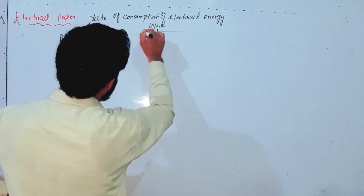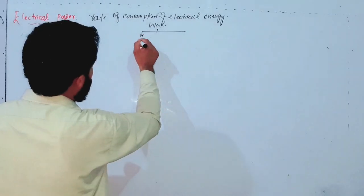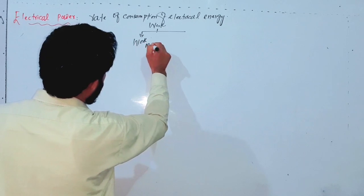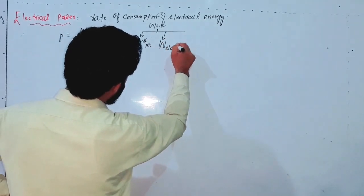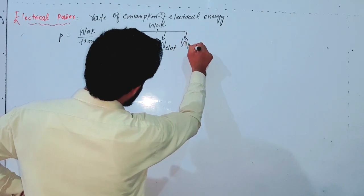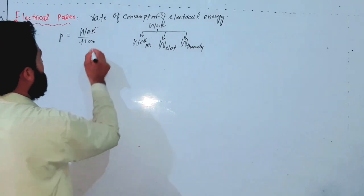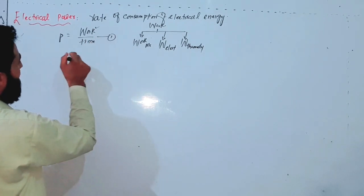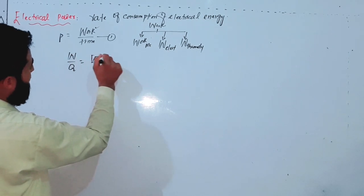This work is called electrical work, because we have different types of work. The first is called mechanical work, the second is called electrical work, and the third is called thermodynamic work. Here we are dealing with electrical work. Electrical work per unit charge is called potential difference.